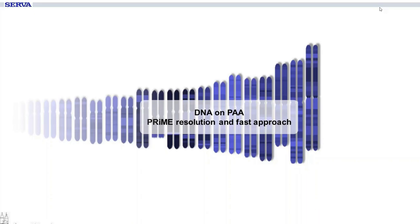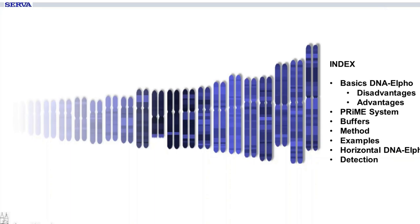Our topic today is DNA on PAA, where PAA is the abbreviation for polyacrylamide gels. First, I will talk about the basics in electrophoresis of nucleic acids and display the advantages and disadvantages of agarose and polyacrylamide gels. I will present the Prime system and all chemicals or buffers you need, list the methods and show examples of gels. A short digression concerning horizontal electrophoresis and possible detection devices will then end the webinar.